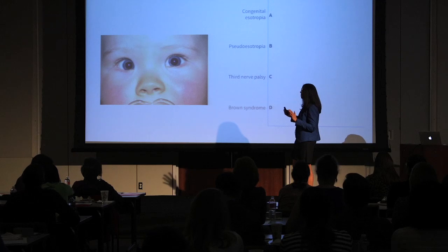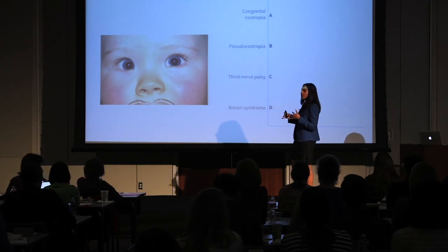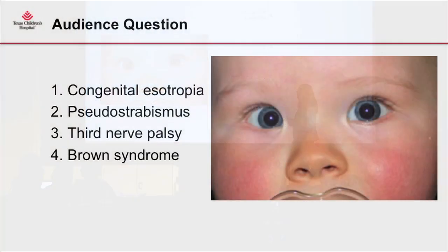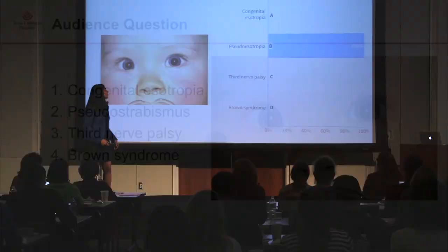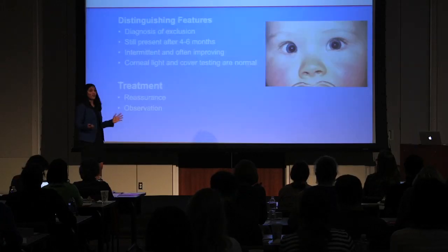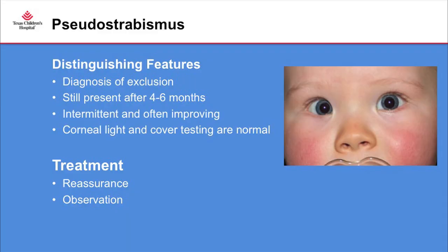Our first audience response question: do you think this baby has congenital esotropia, pseudo-esotropia, third nerve palsy, or Brown syndrome? This is pseudo-esotropia. Pseudo-esotropia is a diagnosis of exclusion — I rule out every other thing on the differential before I say a child has pseudo-esotropia or pseudo-strabismus.